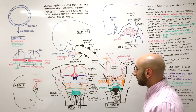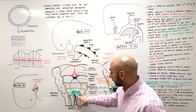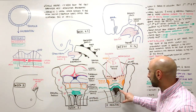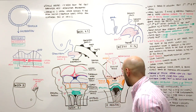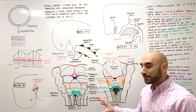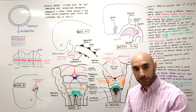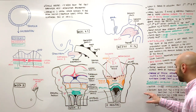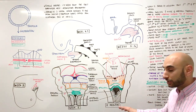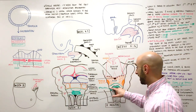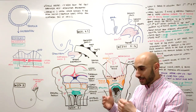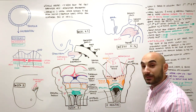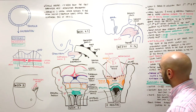Moving on, we have the epiglottal swelling from the fourth pharyngeal arch in week five, which becomes the epiglottis by the fifth month. This is important to know because it helps relate the nervous innervation. The fourth pharyngeal arch gets its nerve supply from the superior laryngeal nerve. As a bonus point, the extremely posterior part of the tongue — right near where the epiglottis is — is innervated by the superior laryngeal nerve.